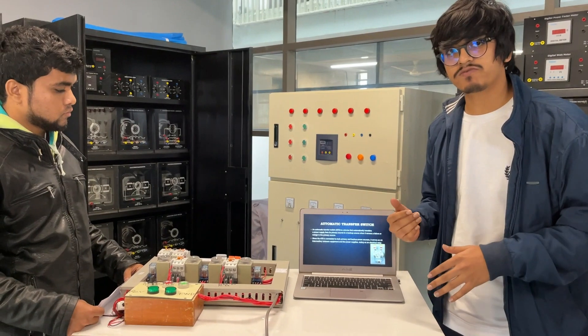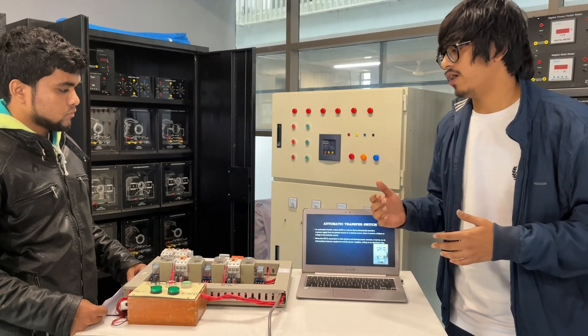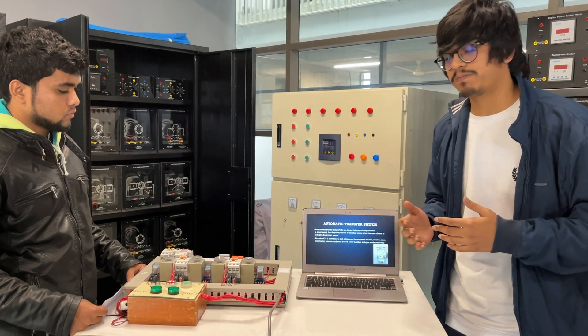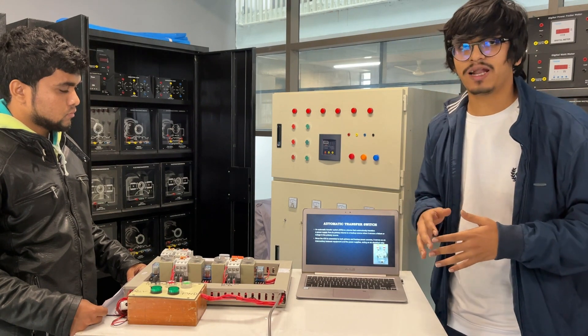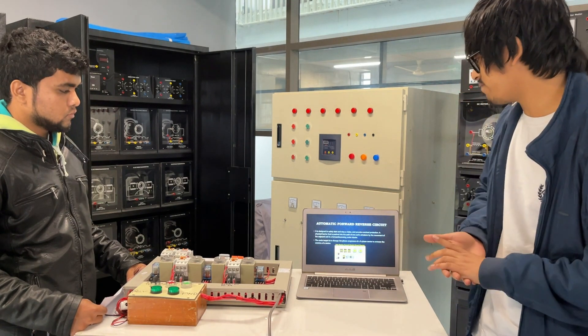By setting priority, the automatic transfer switch will change the power source from generator to PDB and turn off the generator.